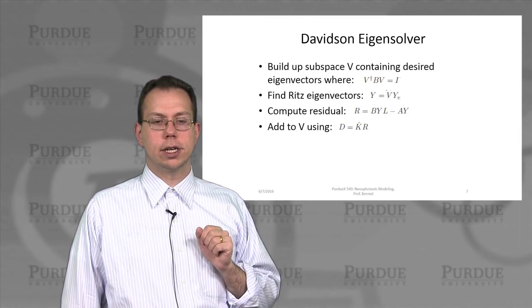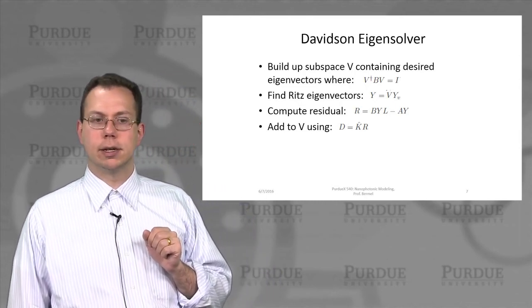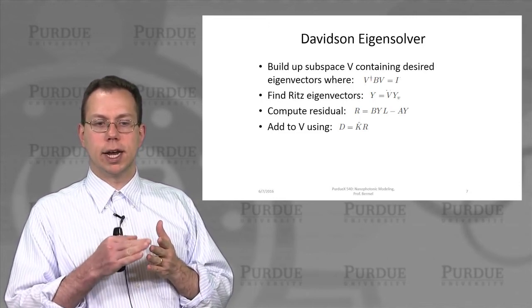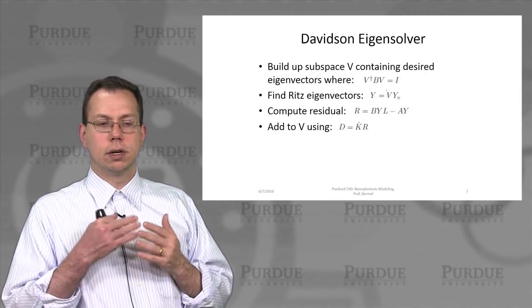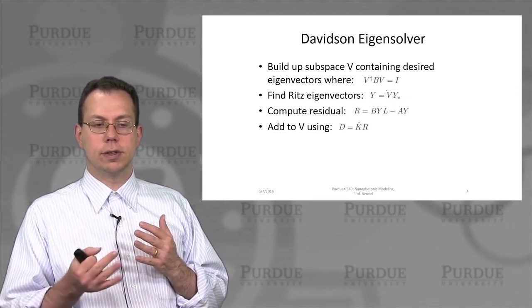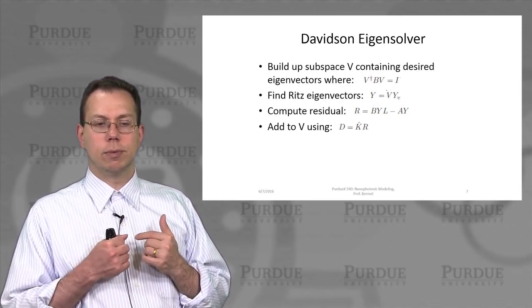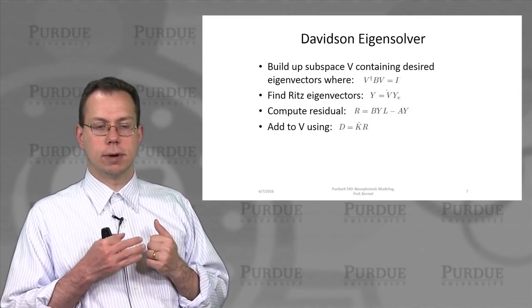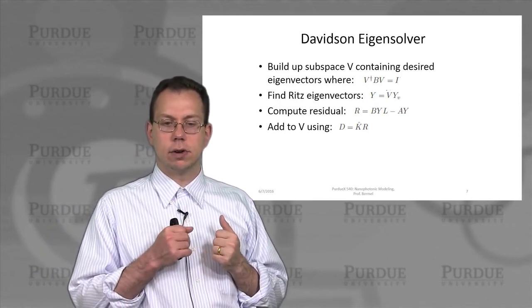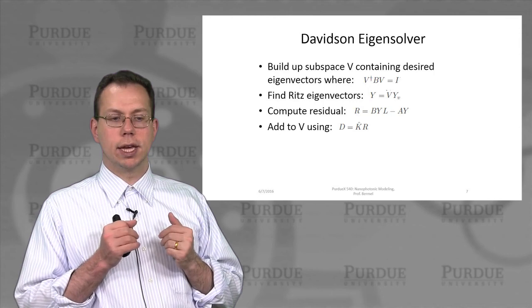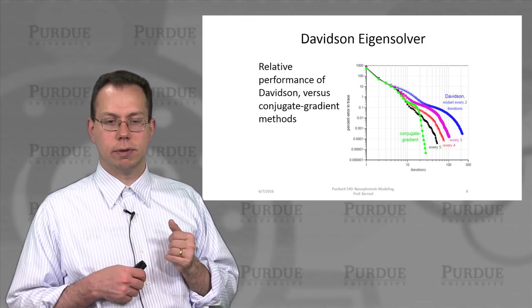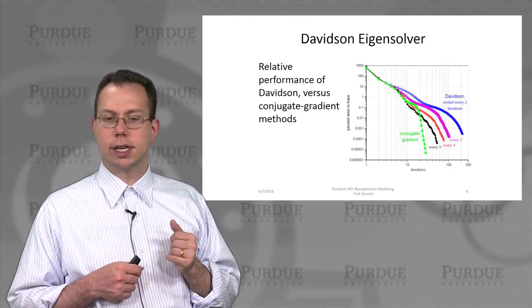And then there's another type of eigensolver that we can use called Davidson eigensolver. And then this is where you actually would create a subspace V, which would have the eigenvectors that we care about. So, of course, related to the previous Raleigh-Ritz minimization that we talked about earlier. But we also calculated a residual Y, as it's called, which is equal to the product of V and YV. And then we would add that, oh sorry, the residual would be BYL minus AY. And then we would add that to V using the D operator.